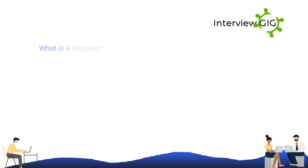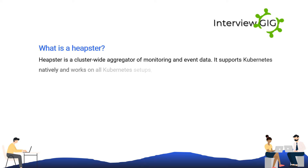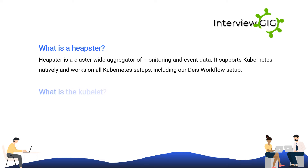What is Heapster? Heapster is a cluster-wide aggregator of monitoring and event data. It supports Kubernetes natively and works on all Kubernetes setups, including RD's workflow setup.